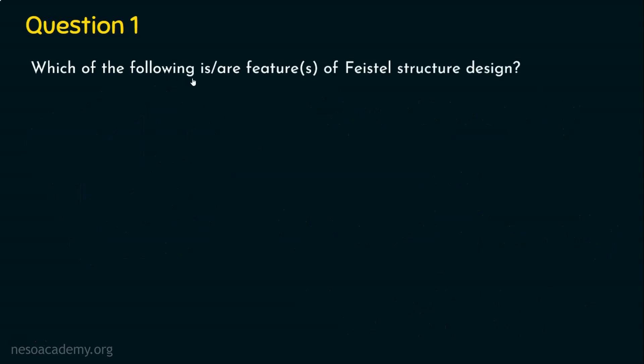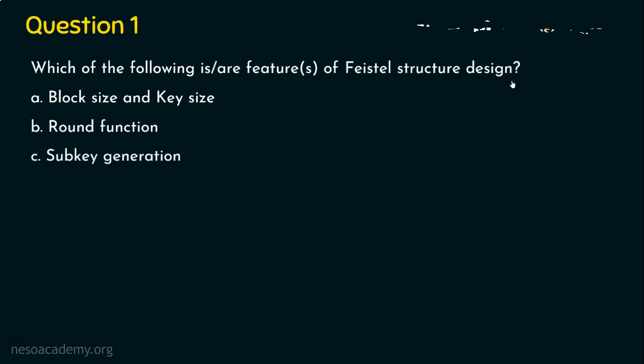Question number one: Which of the following is or are the feature or features of Feistel structure design? Option A, block size and key size. Option B, round function. Option C, sub key generation. Option D, all of the above.